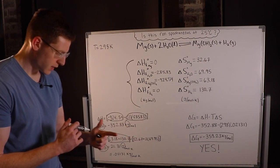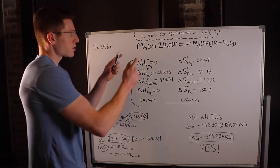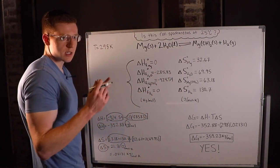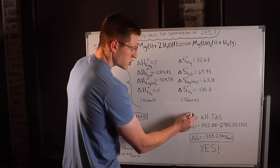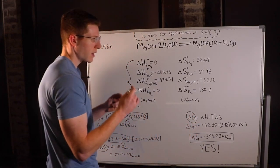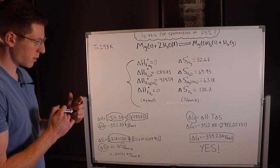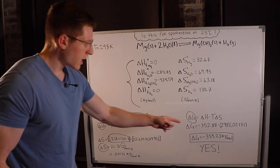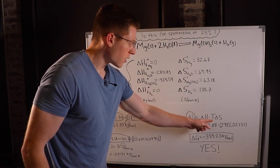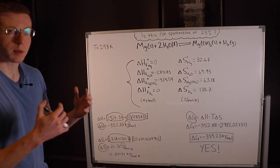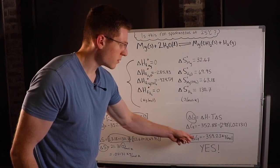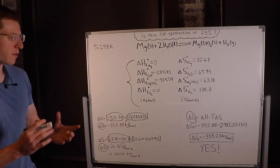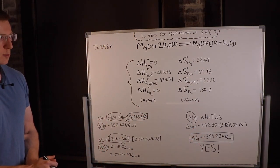To tell whether this reaction is spontaneous, we want to see if delta G is positive or negative, because that tells us whether the reaction is spontaneous. Now that we have our delta H, T, and delta S, we can simply plug in all the values. This comes out to negative 359.23 kilojoules per mole.